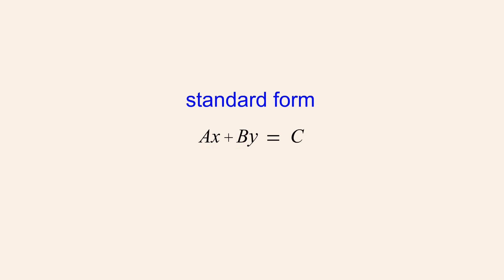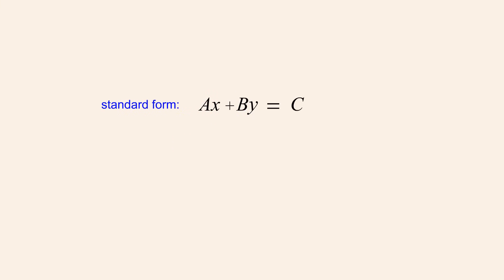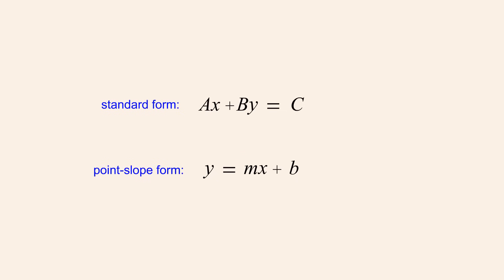For example, the constants a and b together determine the line's slope. We can show that this is true by rearranging the standard form to look like the point-slope form and seeing which part of the equation corresponds to the slope, m.